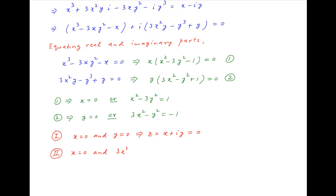The second possibility is that x is equal to 0 and 3x square minus y square is equal to minus 1, which implies that y square is equal to 1. And therefore y is equal to plus or minus 1. Therefore z, which is equal to x plus iy, is equal to plus or minus i.